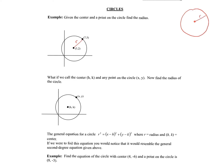The distance — which is the length of the radius — is the square root of (x₂ − x₁)² + (y₂ − y₁)². For our example, the radius is the square root of (7 − 3)² + (5 − 2)², which gives us the square root of 4² + 3², or the square root of 16 + 9, which is the square root of 25. So the radius here is 5.